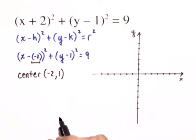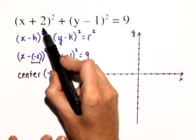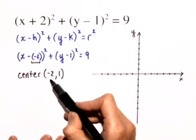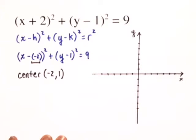So in general when we want to find the center of a circle we look at it in its standard form and if we see x plus 2 we take negative 2 for the x coordinate. If we see y minus 1 we take positive 1 for the y coordinate.